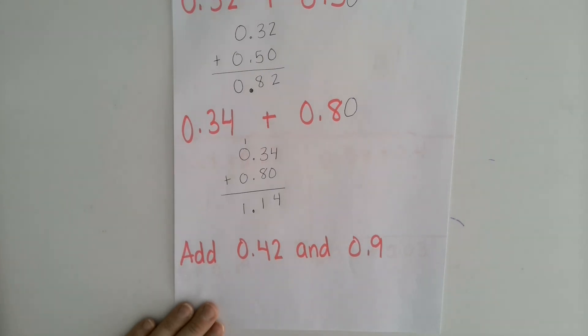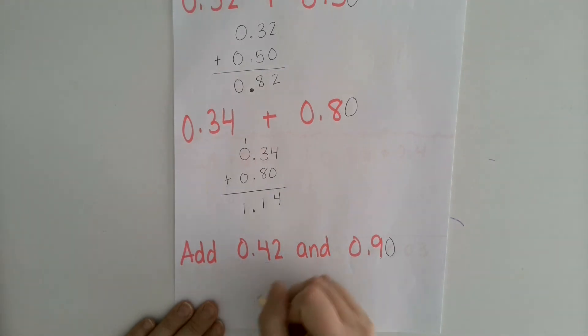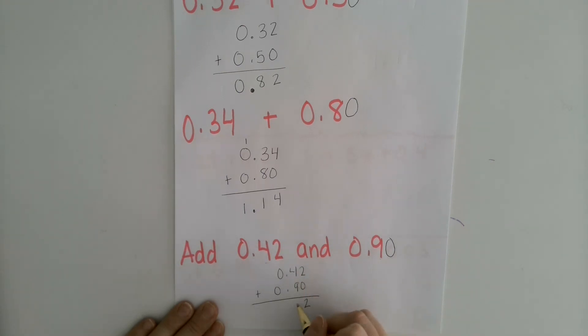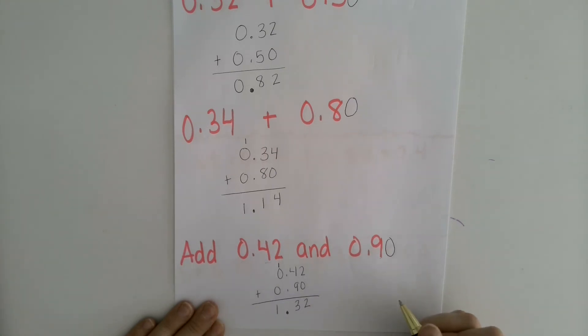And then in my last problem, this is just another way you might see the problem written out in words and telling you what to add. But same kind of thing. I noticed that this problem has two places after the decimal and this one only has one. So I'm going to add that zero so that they go the same number of places past the decimal point. And then I'm going to start lining them up. 2 plus 0 is 2. 4 plus 9 is 13. So I'm going to then bring the one over. And then 1, 0, and 0 is 1. And I bring that decimal point straight down. So I end up with 1.32.